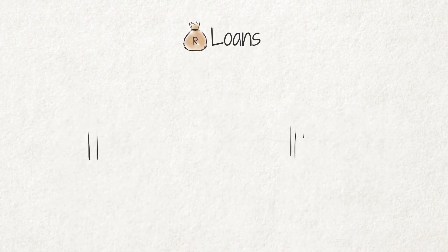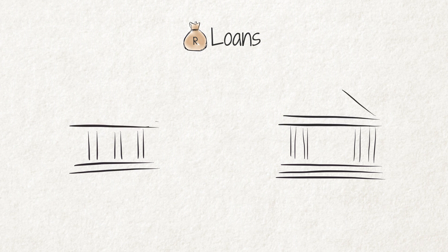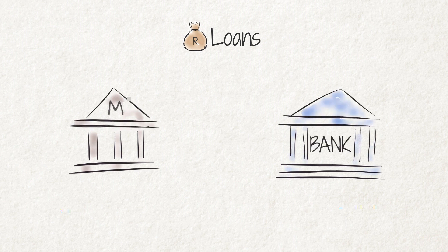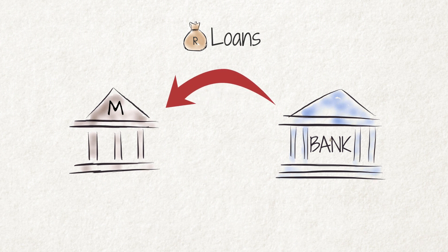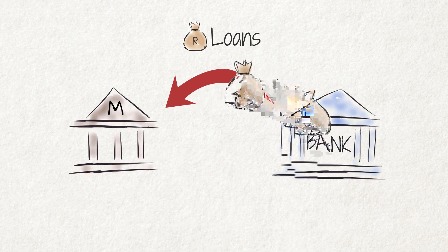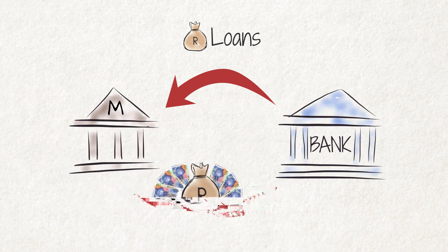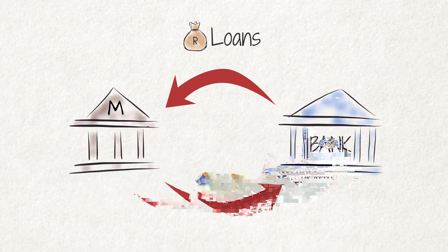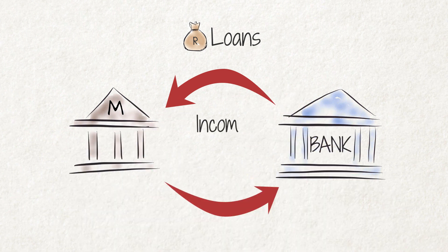Often, the MIG funds are not sufficient to pay all the construction costs. Municipalities then have to borrow money from a bank. The municipality has to repay this loan plus the interest thereon from its income, from taxes and charges.